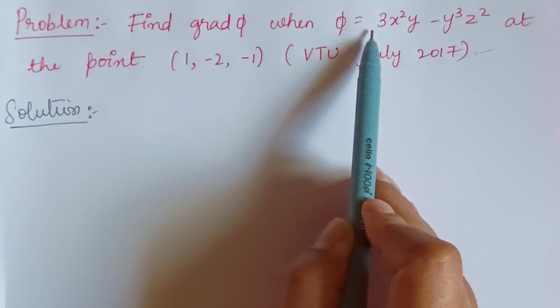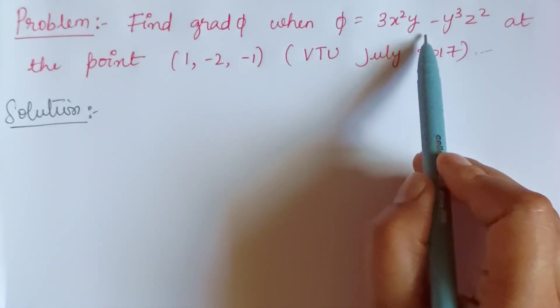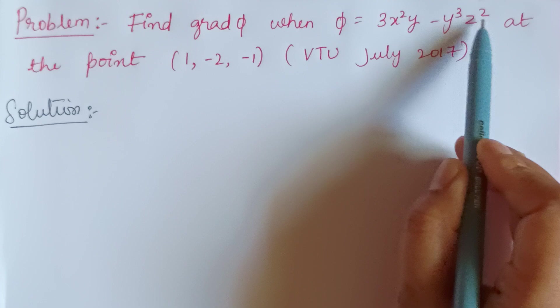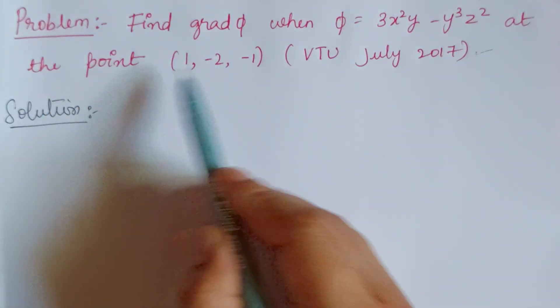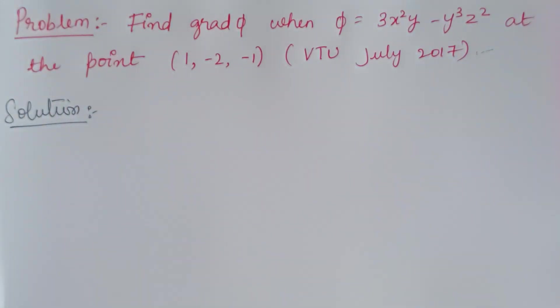When the scalar function phi equals 3x²y minus y³z² at the point (1, -2, -1).